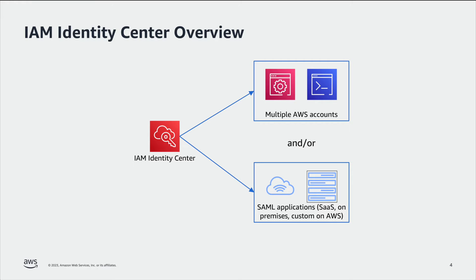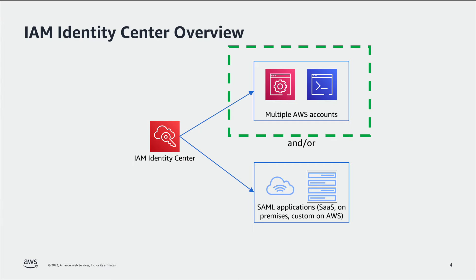The first is multi-account permissions to control your users' access to specific AWS accounts. And the second is single sign-on access to AWS-managed and customer-managed applications. For this demonstration, we will focus on multi-account permissions and granting access to your workforce to your AWS accounts. However, the new list assignment APIs cover both multi-account permissions and application assignments and behave similarly.